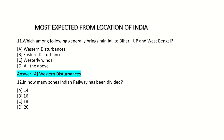12th question: In how many zones has Indian railway been divided? Option A: 14. Option B: 16. Option C: 18. Option D: 20. Answer: Option C — 18.